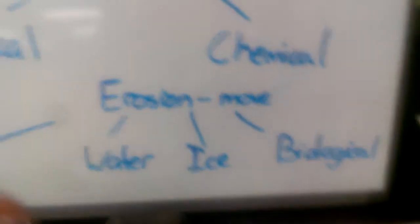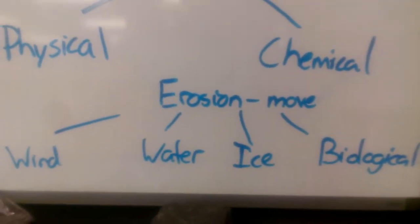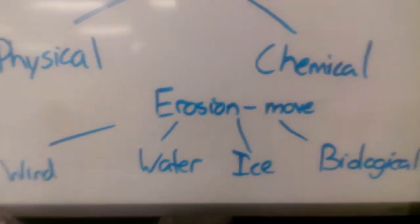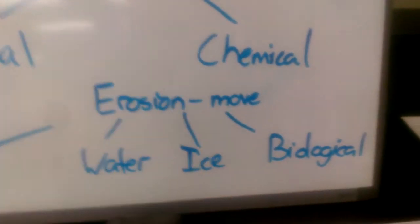Well, now that we've broken up the rocks, now we have to take those pieces of rock and move them. So there are four main agents of erosion. So we've got wind, water, ice, and biological erosion.